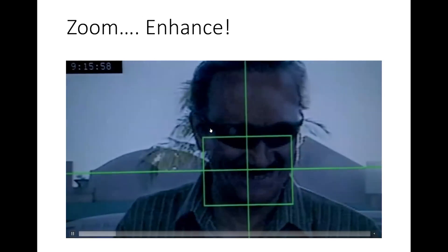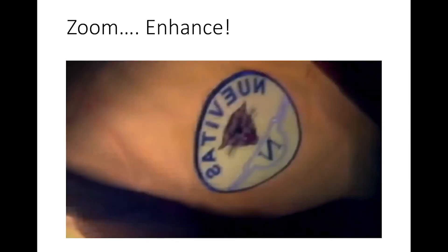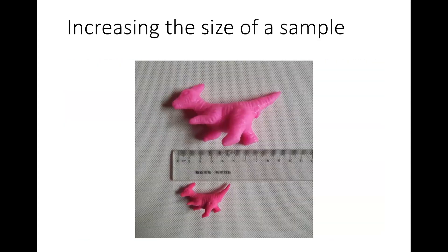As you probably are familiar with things like CSI, we can't just go in, zoom, press enhance, and suddenly get a clear image off the reflection of someone's glasses that you're able to see. What you can do is increase the sample size. This is an example of a dinosaur that you would put in water and it grows larger. This is a common kid's toy.